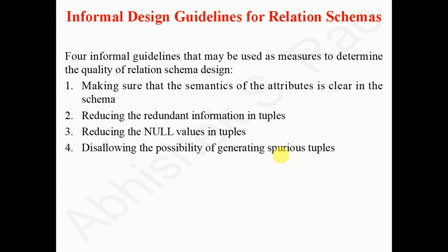We have four informal guidelines which may be used to measure and determine the quality of relation schema design. These are: making sure that the semantics of the attributes is clear in the schema, reducing the redundant information in tuples, reducing the null values in the tuples, and disallowing the possibility of generating spurious tuples.